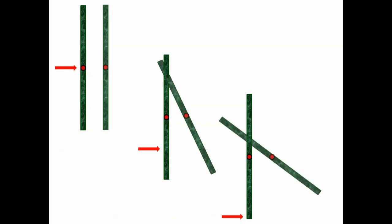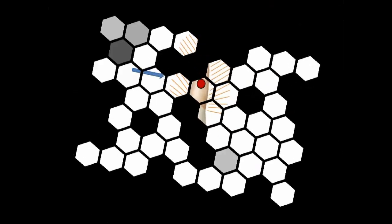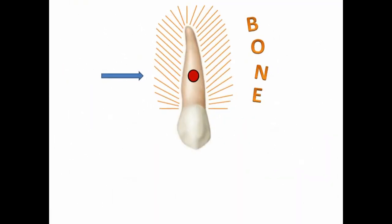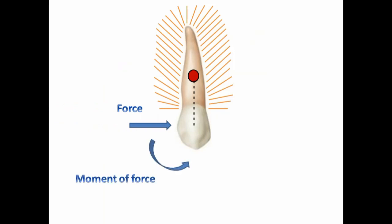Here are three situations with the same force applied at different distances from the centre of mass. As the distance of force application from the centre of mass increases, rotational tendency due to moment of force also increases. When we try to move teeth orthodontically, it would be best if we could apply force on the centre of resistance, which isn't really possible with a healthy periodontium. So to move a tooth, we apply force on the crown, which is away from the centre of resistance, hence moment of force tends to rotate the tooth.